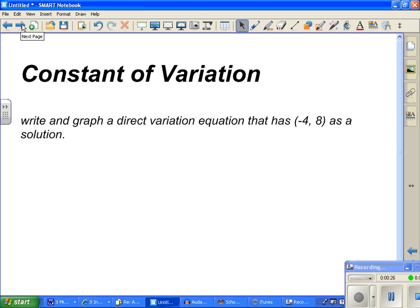Write and graph a direct variation that has (-4, 8) as a solution. Well, in general, a direct variation looks like this: y equals ax. That's in general. y = ax. This is a direct variation. The constant of variation is a.